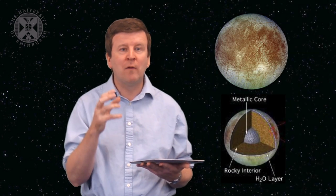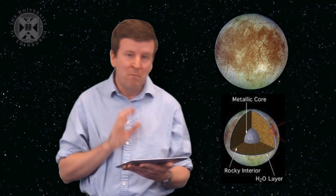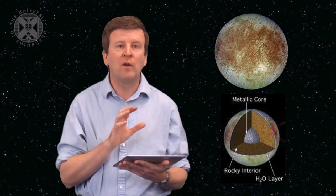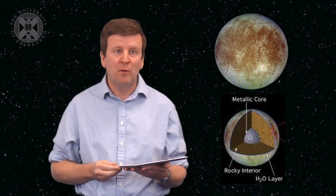Well, this liquid water ocean seems to be formed by tidal buckling. The huge gravitational force of Jupiter buckles Europa and creates heat in the center of that moon that melts the ice and creates a liquid water ocean. So here's an example of a moon that seems to have liquid water, despite the fact that it's outside of the classical habitable zone.